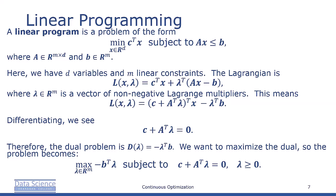Where λ is an m dimensional real vector of non-negative Lagrange multipliers. This means that L(x, λ) by rearranging equals (c + A^T λ)^T x - λ^T b. Differentiating with respect to x and setting it equal to 0, we get that c + A^T λ = 0.